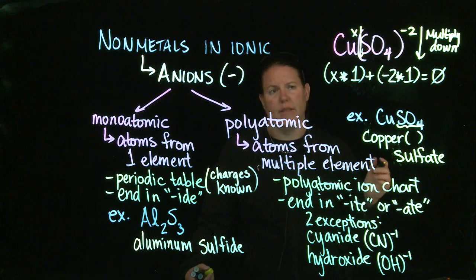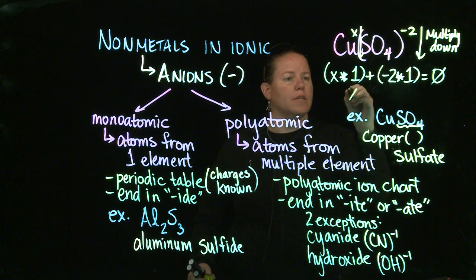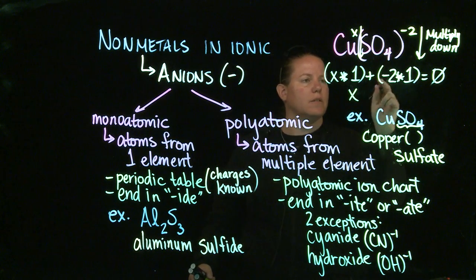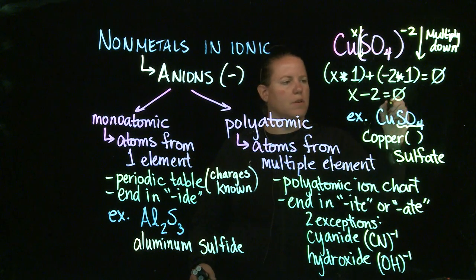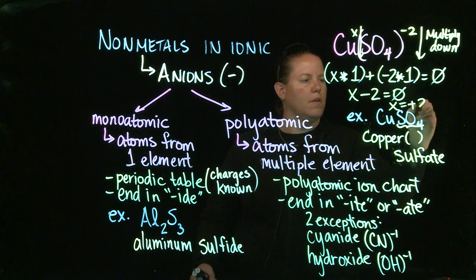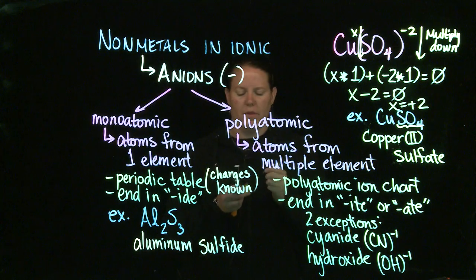If you multiply straight down, you're taking the charge times the number of atoms. That would be x times 1, because there's nothing written there, so there's at least one of them, and minus 2 times 1. If you add those together, this has to have a neutral charge overall, which means the sum of the charges has to equal 0. That's essentially saying the same thing as you would for a neutral compound. In this case, x times 1 is x, minus 2 times 1 is minus 2, equals 0. x minus 2 equals 0, so x has to equal plus 2. And you're going to write that in Roman numerals right there.